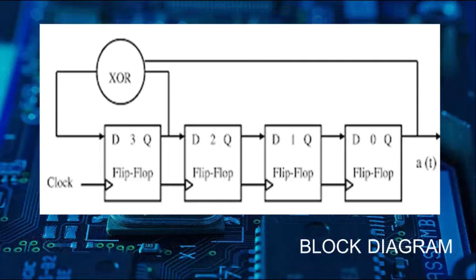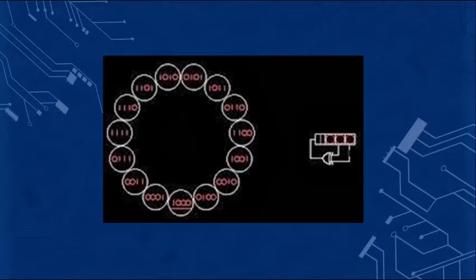By maximum length, we mean that the pattern must repeat itself after 2 power n clock cycles for an n-bit LFSR. In this case, if the LFSR has to be of maximum length, then the pattern has to repeat after 16 clock cycles.